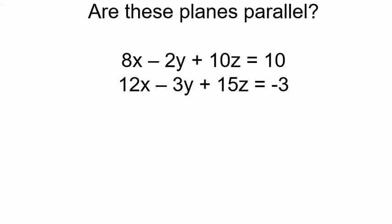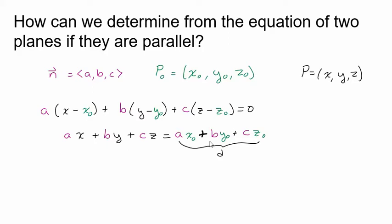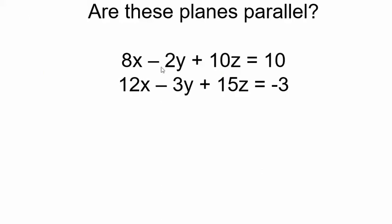So let's take a look at an example. We've got the a, b, and c coefficients, and then whatever this d value is. Looking at these three numbers — the coefficient on x, the coefficient on y, the coefficient on z — that's my normal vector, which determines the direction of the plane. So in this example, the normal vector for the first plane is (8, negative 2, 10), and for the second plane, the normal vector is (12, negative 3, 15).